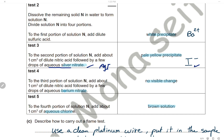Adding nitric acid followed by barium nitrate to the third portion shows no visible change, since barium nitrate does not react with any ions present in solid N — confirming no sulfate ions. Adding about 1 cm³ of aqueous chlorine to the fourth portion produces a brown solution. Chlorine is more reactive than iodine, so it displaces iodine from barium iodide, forming iodine — and the iodine solution is brown.